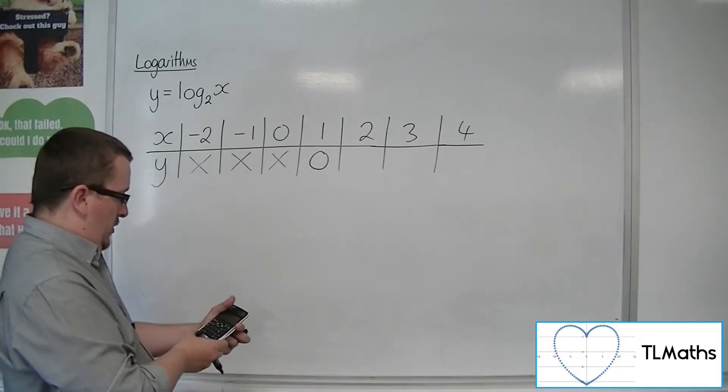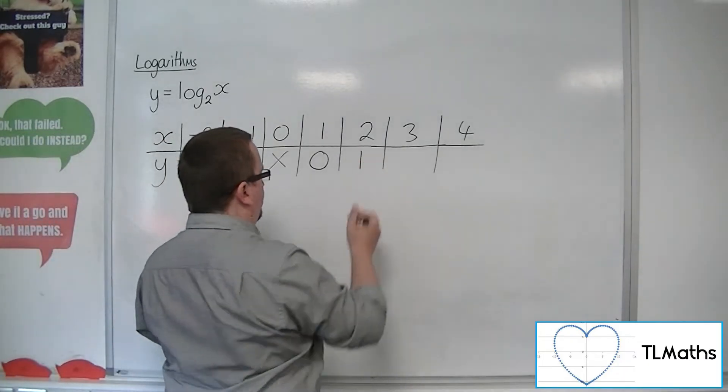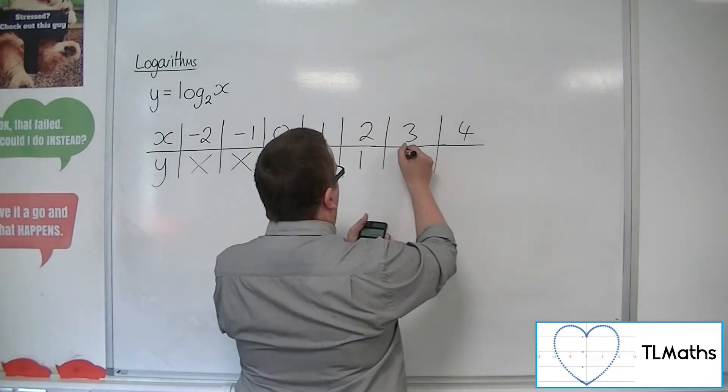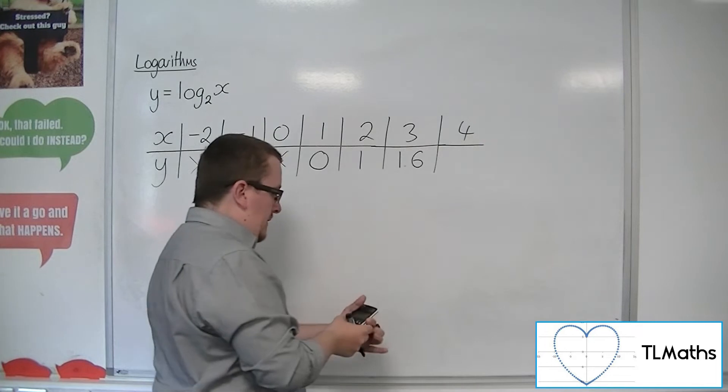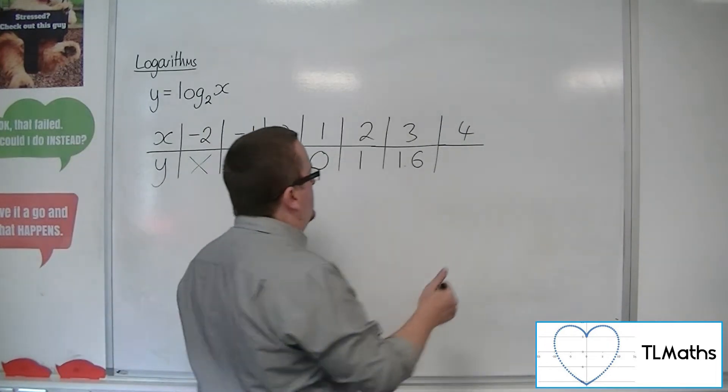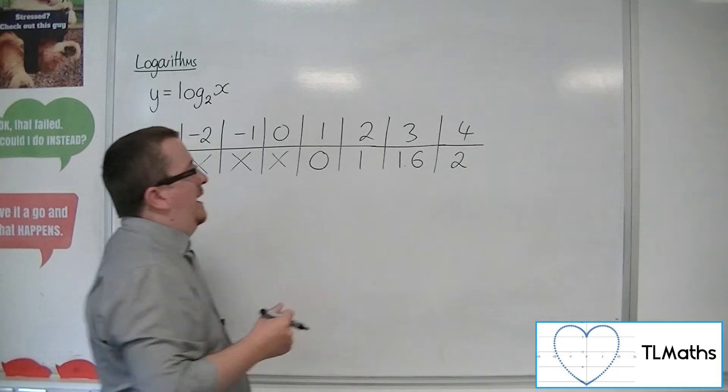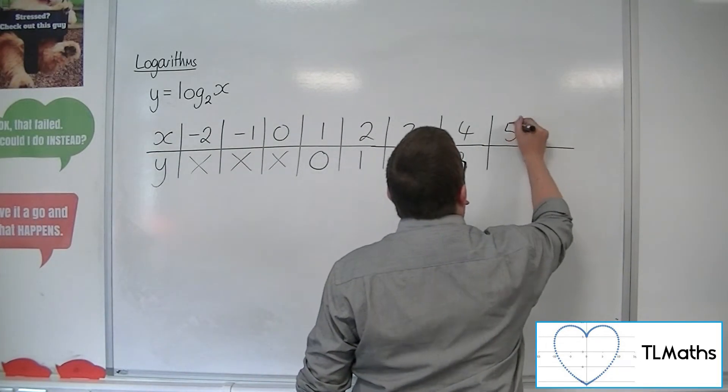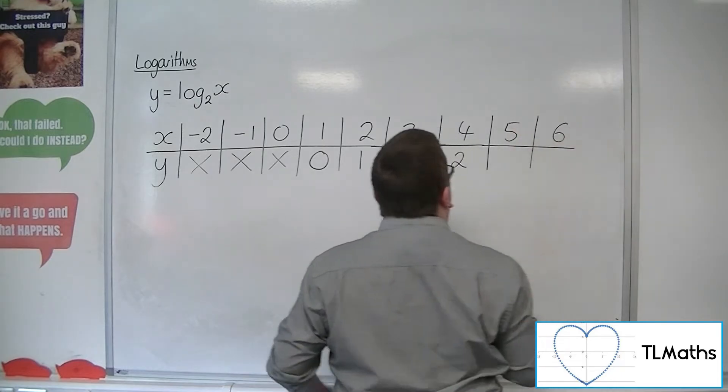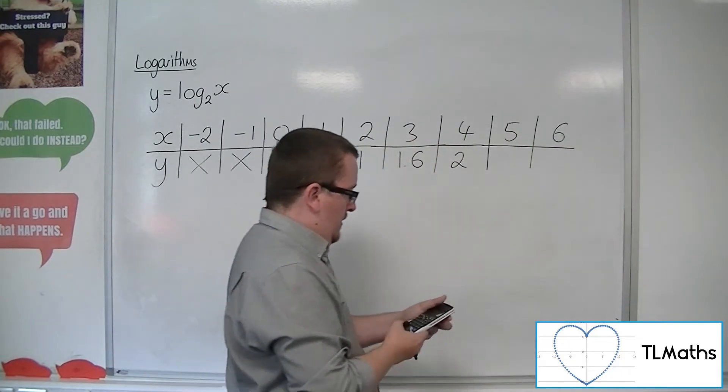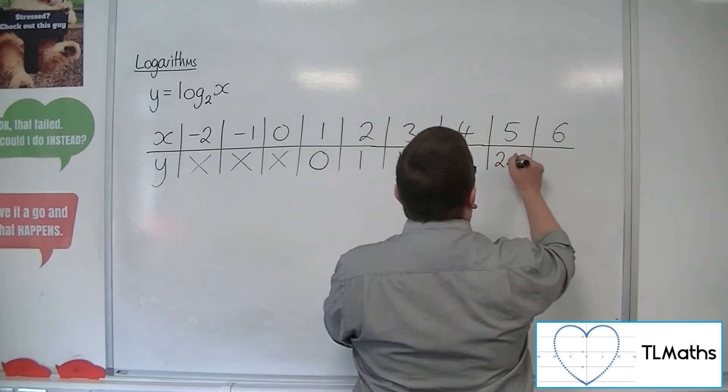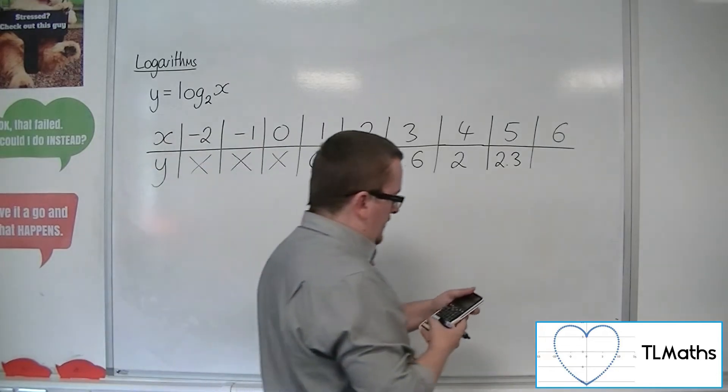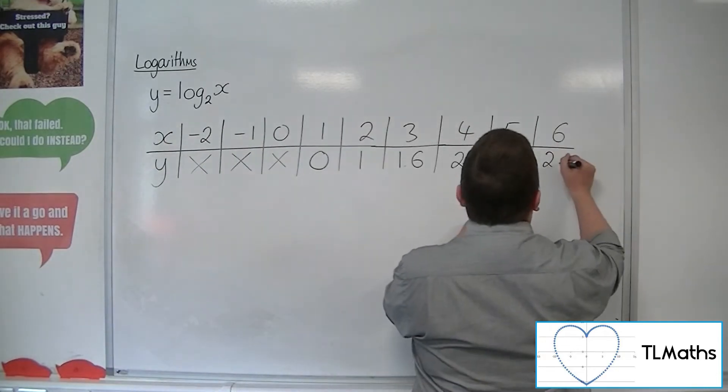So let's try log 2 of 2. Well, that's 1. Log 2 of 3. Well, that's 1.58, so let's do 1.6, go to one decimal place. And log base 2 of 4 is 2. Okay, looks like we're probably going to need a couple more values. So if we go 5, then 6. So log base 2 of 5 is 2.3 approximately, then 6 is 2.6 approximately.